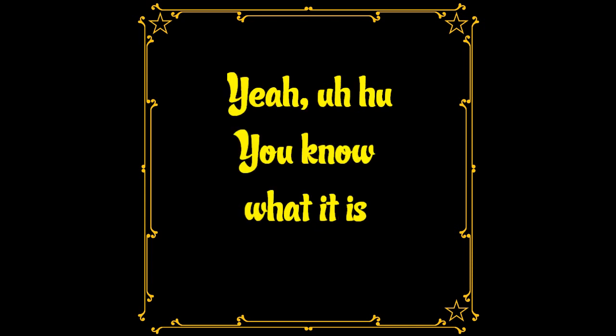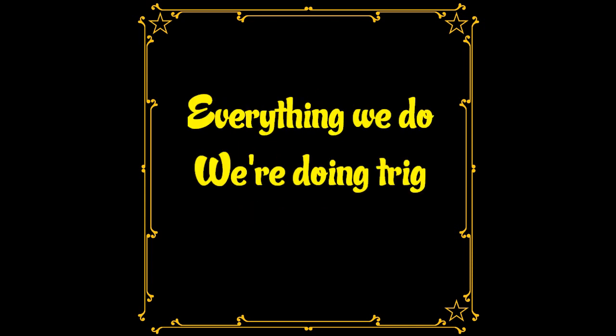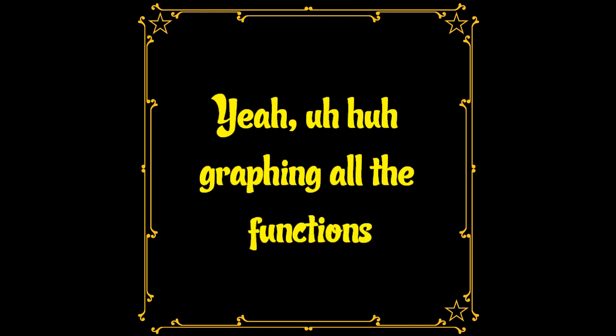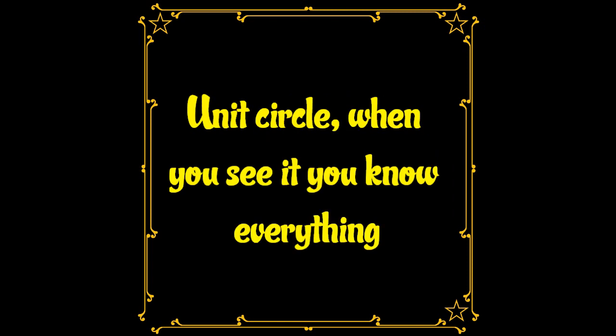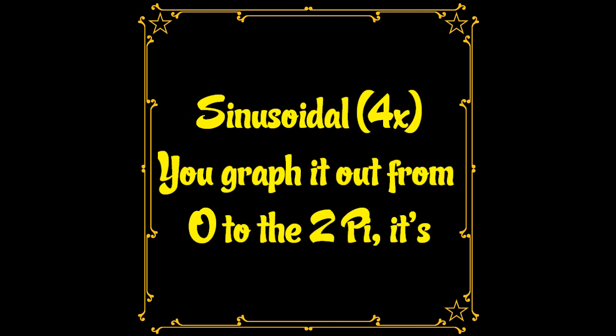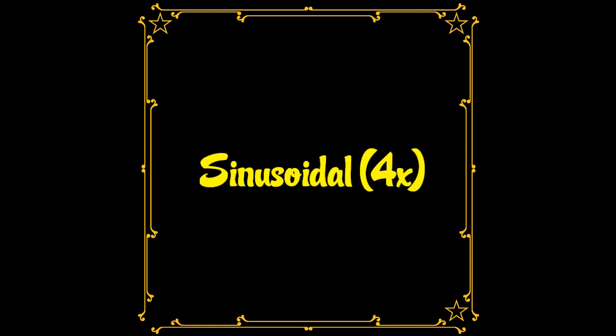You know what it is — everything we do, yeah, we're doing trig. Wrapping all the functions. When y is sine to x, x that's shrunken. Unitical — when you see it, you know everything. Sinusoidal, sinusoidal — you graph it out from zero to the two pi.